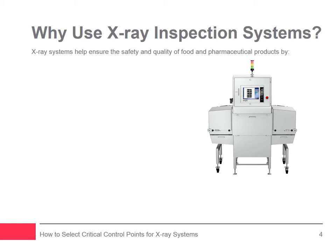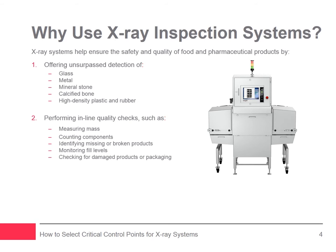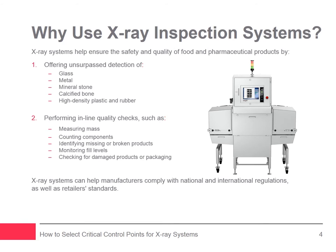X-ray systems ensure the safety of food and pharmaceutical products by offering unsurpassed detection of physical foreign bodies. No other technology detects such a wide range of foreign bodies, including glass, metal, mineral stone, calcified bone, and high-density plastic and rubber. X-ray systems are also capable of performing a wide range of in-line quality checks such as measuring mass, counting components, identifying missing or broken products, monitoring fill levels, inspecting seals, and checking for damaged products or packaging. Incorporating an x-ray system into a company-wide product inspection program can help manufacturers comply with national and international regulations, as well as standards set by retailers.